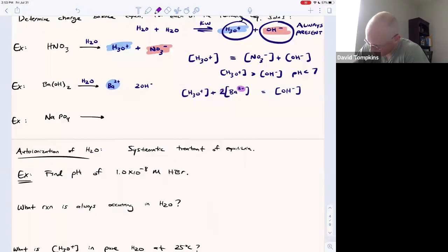So the amount of hydroxide is equal to two times the amount of barium. So be sure to bring that charge down as a coefficient if it's not one.